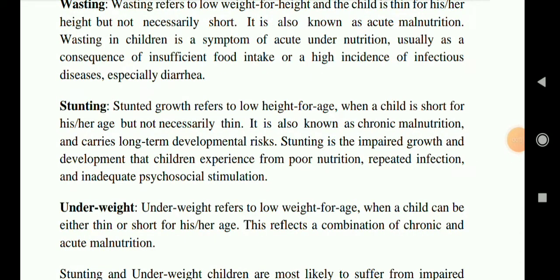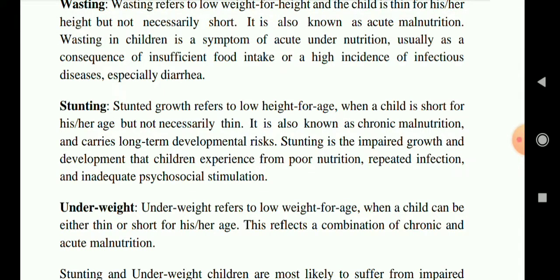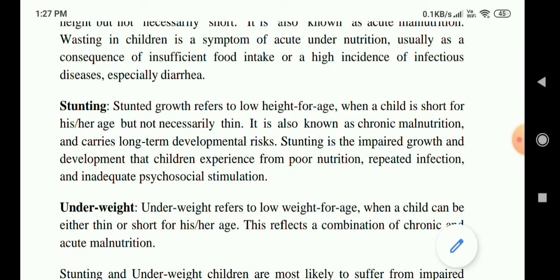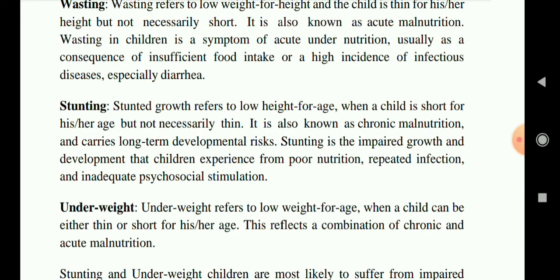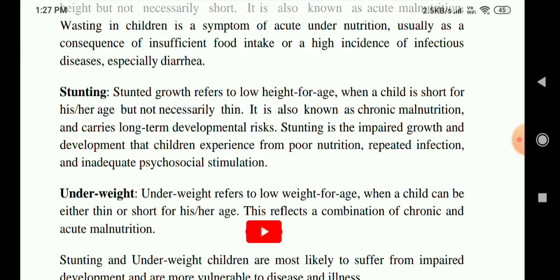Stunting refers to low height for age — when a child is short for his or her age but not necessarily thin. It is also known as chronic malnutrition and carries long-term developmental risk. Stunting is impaired growth and development resulting from poor nutrition, repeated infection, and inadequate psychosocial stimulation. In short, stunting means the child has low height for age — their height is too low for their normal age range.